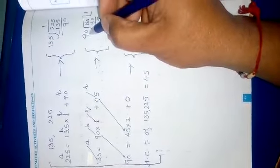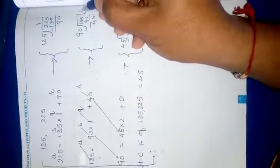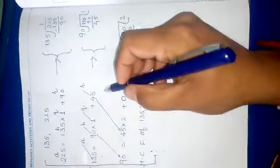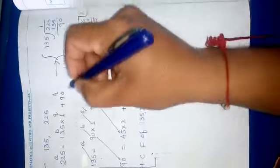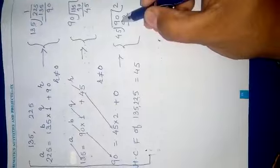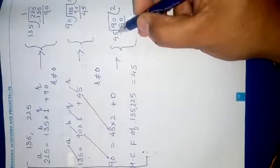135 by 90. The quotient is 1 and the remainder is 45. Again, the remainder is not equal to 0, so we continue the third step. Again divide.